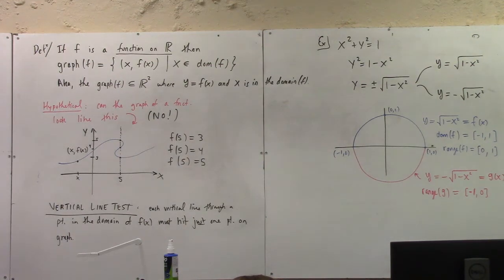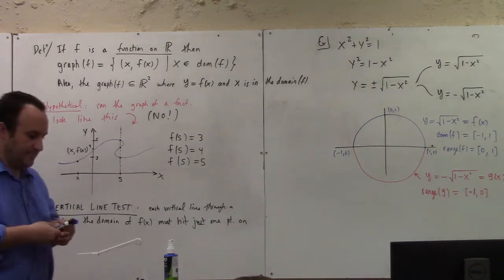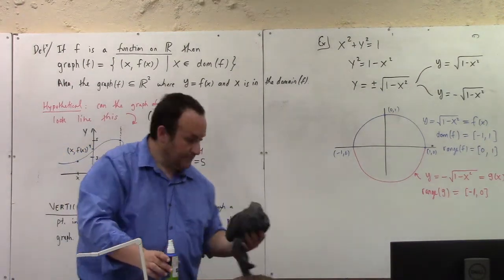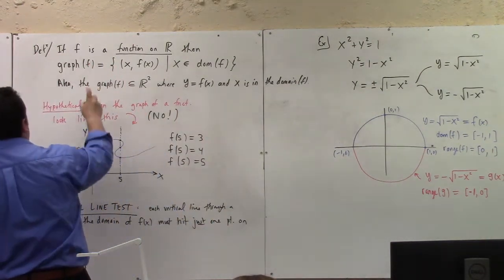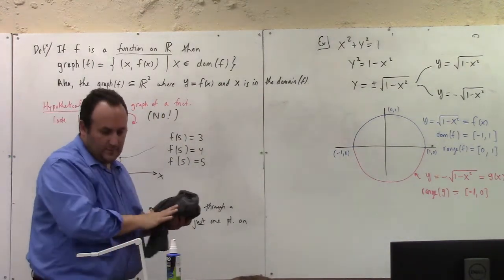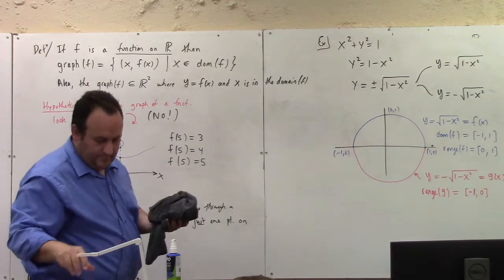But this is kind of like generally the story. If you have a graph of an equation, you can break it up into graphs of functions, but you have to use a bunch of functions to get the whole graph of an equation because the equations usually have, they kind of double back and they have some, like they'll fail the vertical line test in places. So, I have to pass the vertical line test.